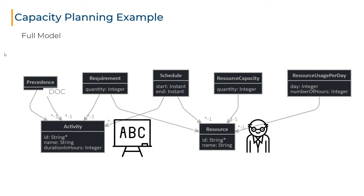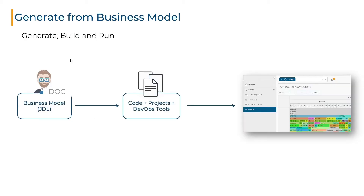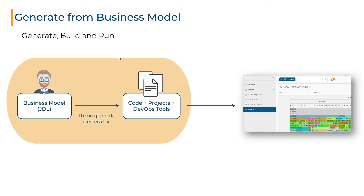There are some additional entities used to store the results produced by the engine. The schedule entity shows when an activity is performed in time and tells the resource that it is being used. The resource usage per day entity is a table that contains the number of hours a given resource has been used during a given day for the whole planning. Now that the JDL description is prepared, we can generate the application. This is done using the platform code generator, which will take your JDL as input and generate the code for the different parts of your application and all the development configuration files needed to build your application.